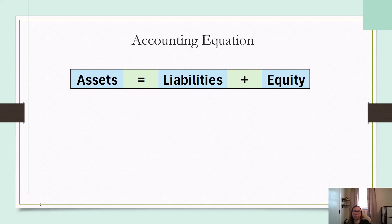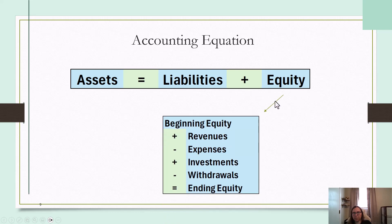In a business, it's going to be business assets, business debts, and owner's equity. To break down equity further: you would take any beginning equity the owners had at the beginning of the period, add any revenues or income, subtract any expenses — and the difference is going to be your net income. Then you would add any additional investments the owner made during that time period, and subtract any withdrawals. That's going to equal your ending equity.